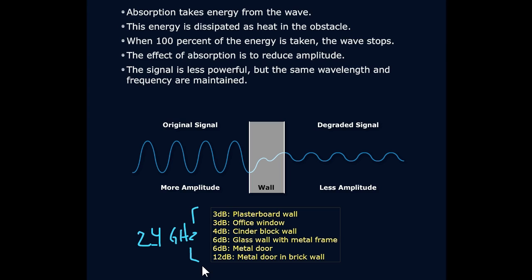You're going to lose four going through cinder block. We see those in office buildings all the time. If you have a glass wall with a metal frame around those conference rooms, notice that actually bumps it all the way up to six decibels of loss. We're losing that much power because of going through that material. Same thing as going through a metal door, which we would probably think more about than that glass wall with a metal frame. Of course, a metal door and a brick wall, that's some pretty solid stuff, and that'll knock out about 12 decibels of strength.